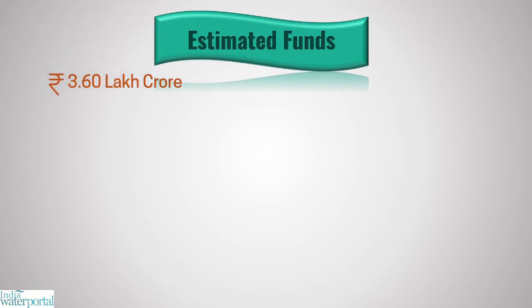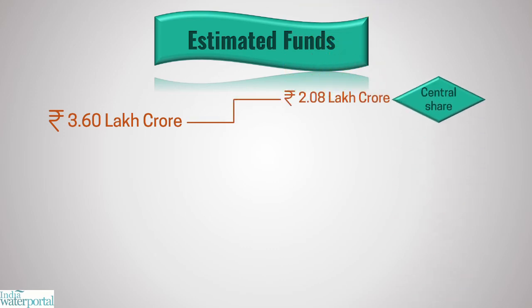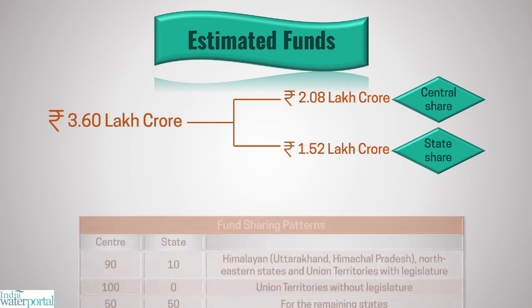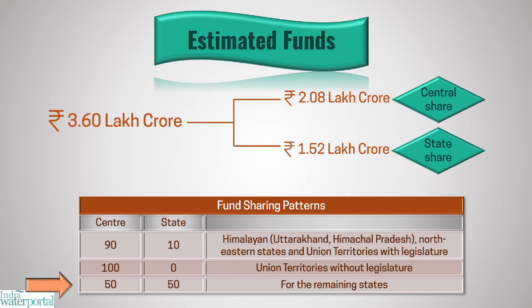The total estimated cost of Jal Jeevan Mission is Rs. 3.6 lakh crore, with central and state shares of Rs. 2.08 lakh crore and Rs. 1.52 lakh crore respectively. The fund-sharing pattern between the centre and state is 90:10 for Himalayan and northeastern states and union territories with legislature, 100:0 for union territories without legislature, and 50:50 for the remaining states.